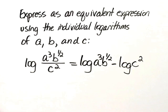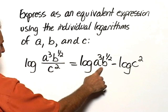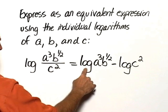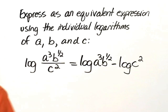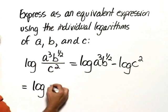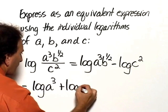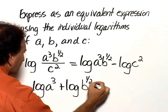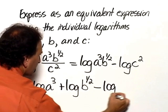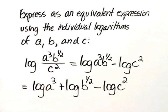Now we'll use the product rule, which is the sum of the individual logarithms. So this would be the log of A cubed plus the log of B to the one-half, and we still have minus the log of C squared.